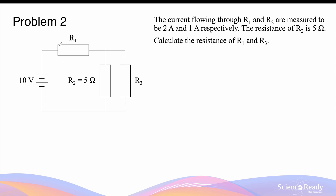Now let's look at a similar example with different values. Again, we have three resistors: R1 is in series with R2 and R3, while R2 and R3 are connected in parallel. The current through R1 is 2 amps and the current through R2 is 1 amp. Applying Kirchhoff's current law, if 2 amps enters the junction and 1 amp goes through R2, then 1 amp must also flow through R3, so that a total of 2 amps exits the node.